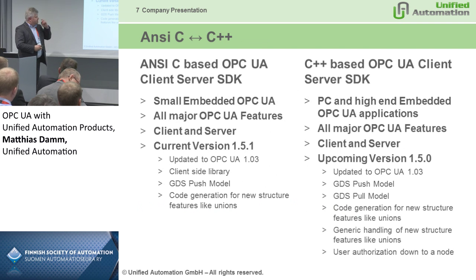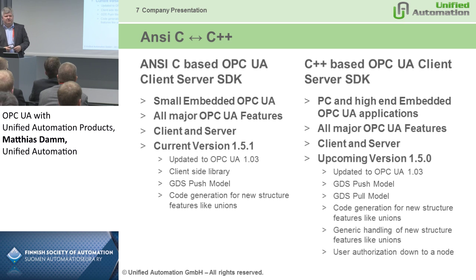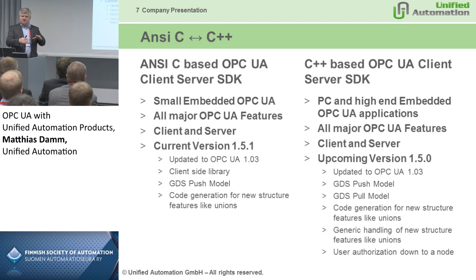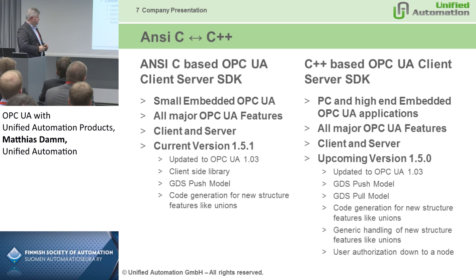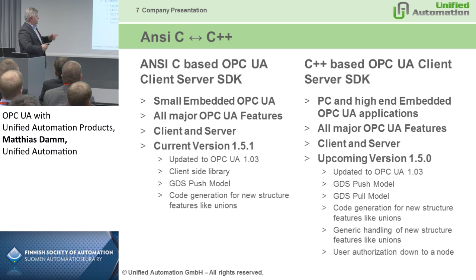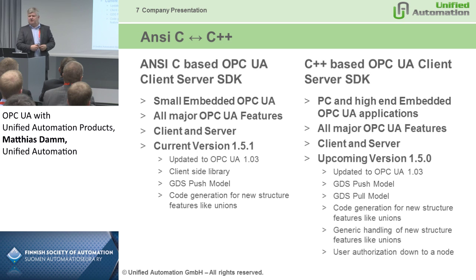Looking at the versions of the different SDKs: for the NCC SDK, we currently have version 1.51, which is already updated to the OPC UA 1.03 specification. Features like GDS are supported as a push model — the server-side SDK provides the API and functionality to do remote certificate configuration. A client-side library was also added. Before, the NCC SDK was just server-side, but with the importance of PLC Open function blocks and client function blocks, we got more and more requests to add client-side functionality, which was added in version 1.5. The new structure features are already included in the code generation for the NCC SDK.